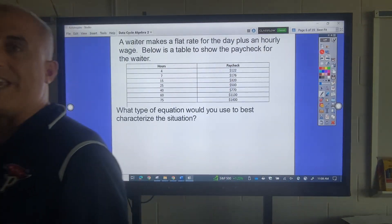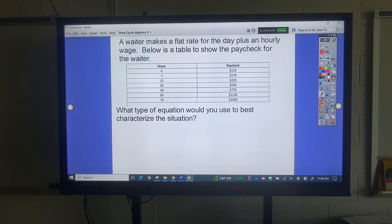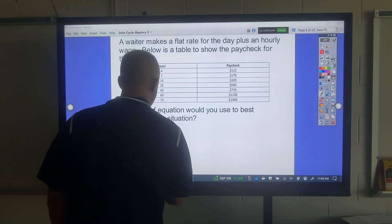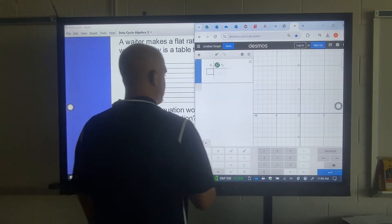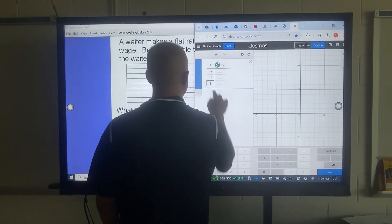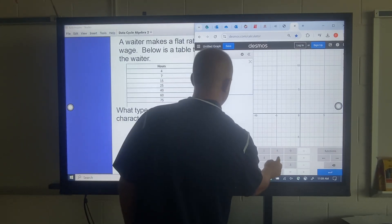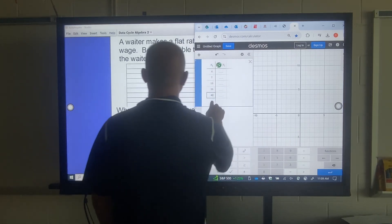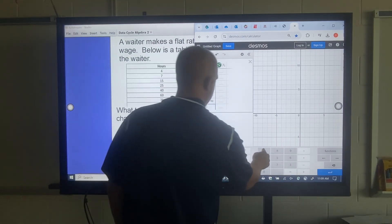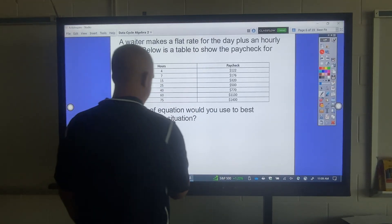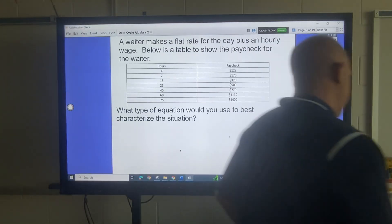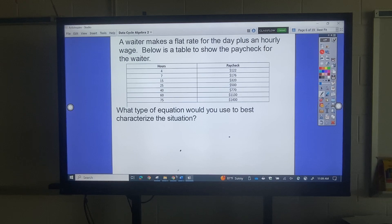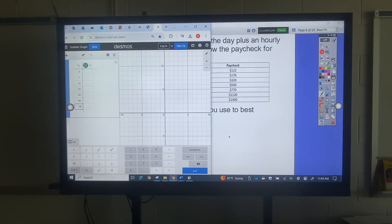So here's a real-life example. A waiter makes a flat rate for the day plus an hourly wage. Below is a table to show the paycheck for the waiter. What type of equation do you use? So here's what you're going to do. You're going to hit this plus sign right here in Desmos, and you're going to make a table. And you're going to type these values in. 4, 7, 15, 25, 40, 60, 75. And then, hopefully I can move this over to the other side without any issues.